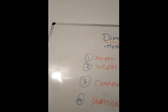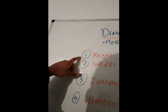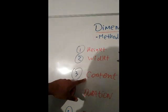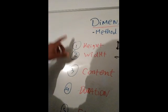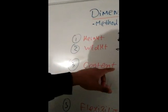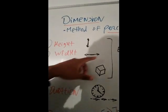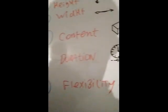Now the first three are obvious. Number one, height. Weight. Content. How high, how wide and what's in it. Well this is obvious, height, width, and content. What it is. That's obvious.